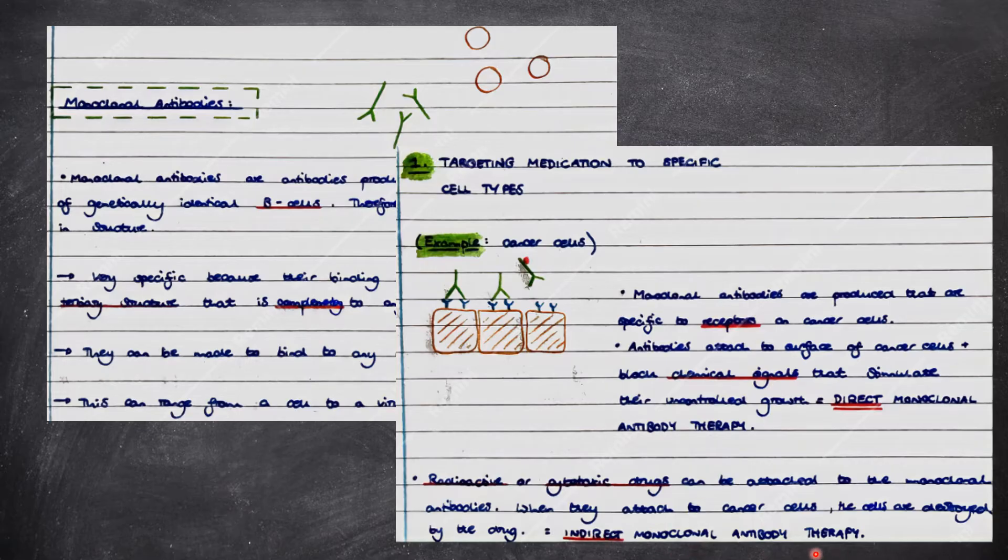In indirect monoclonal antibody therapy, radioactive or cytotoxic drugs can be attached to the monoclonal antibodies. When they attach to the cancer cells, the cells are destroyed by the drug.